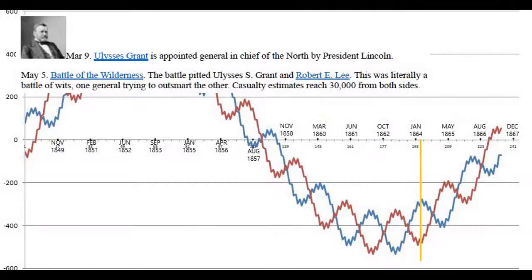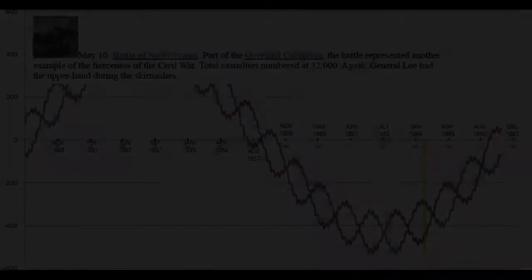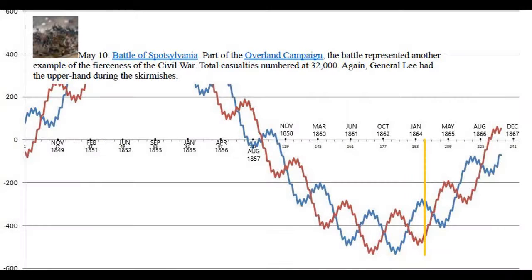On March 9th, 1864, Ulysses Grant is appointed General-in-Chief of the Union by President Lincoln. On May 5th, the Battle of the Wilderness pits Grant against Lee in a battle of wits, with casualty estimates reaching 30,000 from both sides. On May 10th, the Battle of Spotsylvania, part of the Overland Campaign, sees total casualties of 32,000 — with General Lee again having the upper hand.